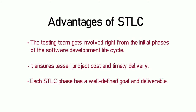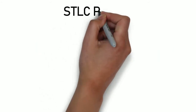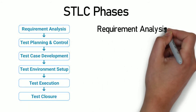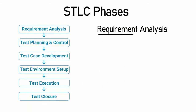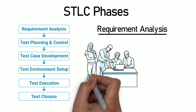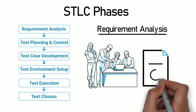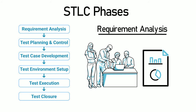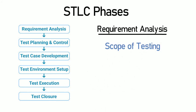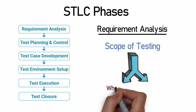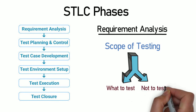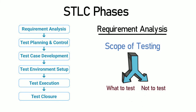Let's move to the different STLC phases now. Requirement Analysis: in this phase, the testing team understands the requirement and analyzes all the requirement documents. Along with that, the scope of testing is defined as to what all features can and will be tested, and what all features will be out of scope of the testing activities.